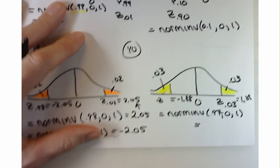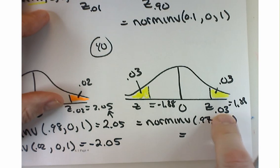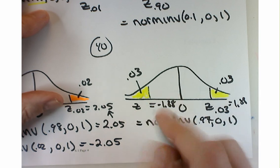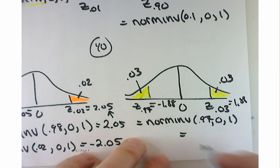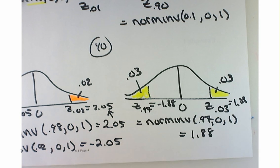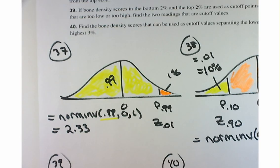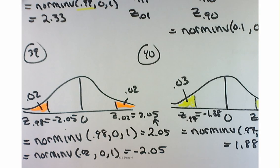This is Z sub 0.03 because there's 3% of the area in the right tail. And the notation for the left one would be Z sub 0.97 — beautiful. I can't overemphasize how important it is to be good at getting these numbers into and out of Google Sheets. Understanding percentiles and how to work with these commands is critical because you're going to use it a lot.